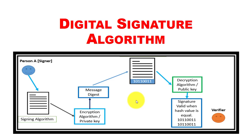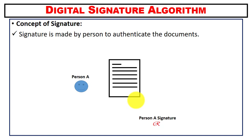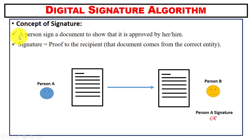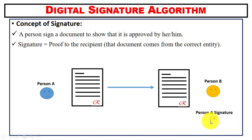In this video you will learn about the digital signature algorithm. First we will understand the concept of signature made by a person in real life. A signature is used to authenticate a document — as you can see, the signature of person A on this document means that this document originates from him. A person signs a document to show that it is approved by him, and the signature proves to the receiver that the document comes from the correct entity.